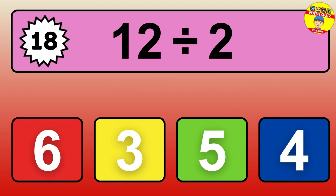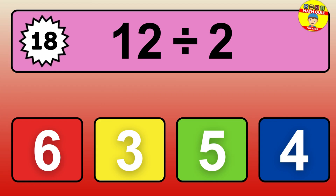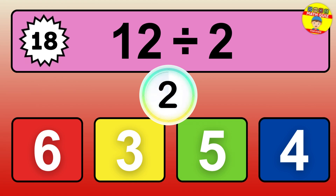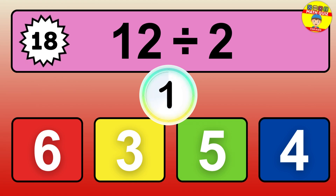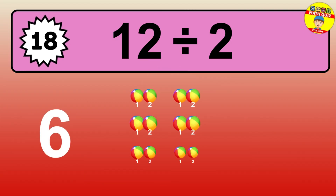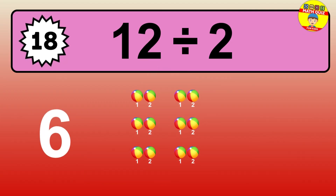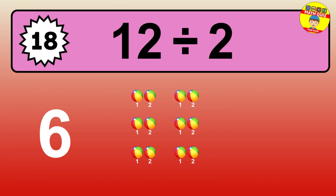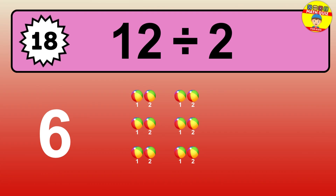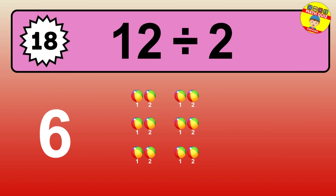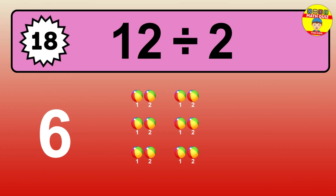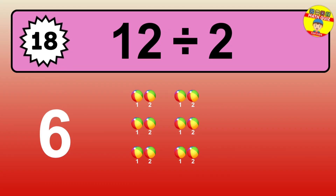14 divided by 7 — time to think. Let's go to the solution. Divide the number 14 by 7. Each group contains 7 units, so dividing 14 by 7 results in 2 equal groups. Thus, the result is 14 divided by 7 equals 2.